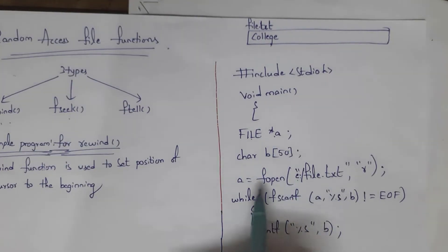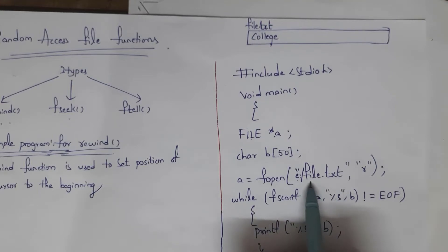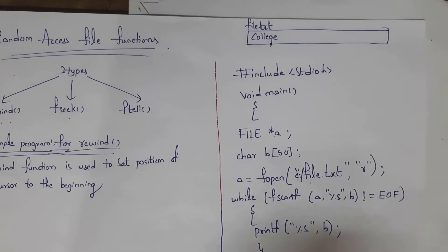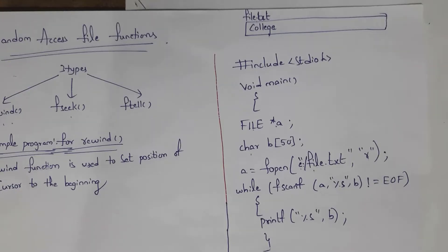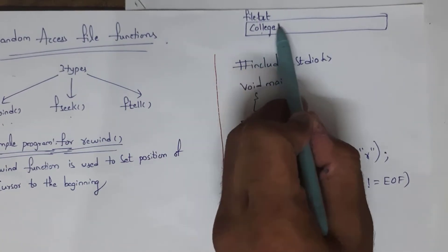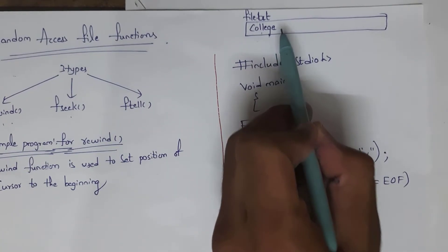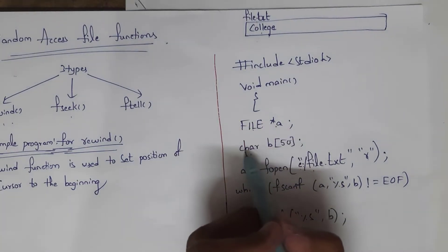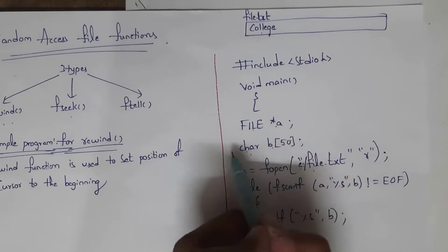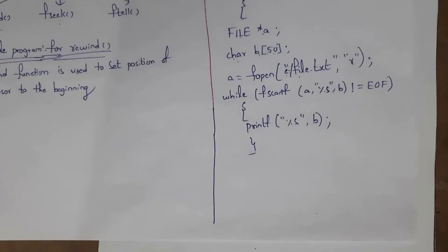This file.txt is present in local disk E, so I provided that address. Using the fopen function I can open the file in read mode, since I want to see the data on my output screen. I need one string variable to store the text information. My file contains the text 'college', so I declared a character array B with size 50 to store this information.